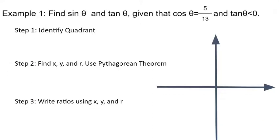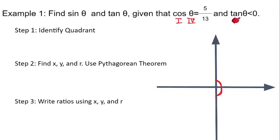Now that we're armed with our background knowledge, let's attack our first problem. Find sine theta and tan theta, given that cosine theta is 5/13 and tan theta is less than 0. Step one: identify which quadrant we're in. Cosine is positive, and cosine is positive in quadrants 1 and 4. Then tangent is less than 0, and tangent is negative in quadrants 2 and 4. The only quadrant that satisfies both criteria — cosine positive and tangent negative — is quadrant 4.